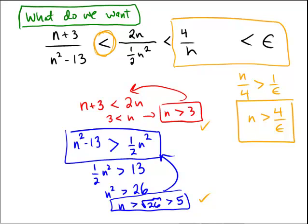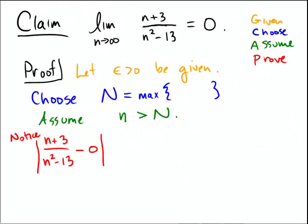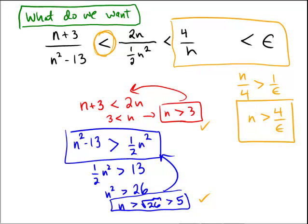So we're going to choose N to be the maximum of 5 and 4 over epsilon. I don't need the 3 because I'm choosing it to be bigger than 5 to ensure that both of these hold. And then the other piece makes sure that the inequality is going to hold.